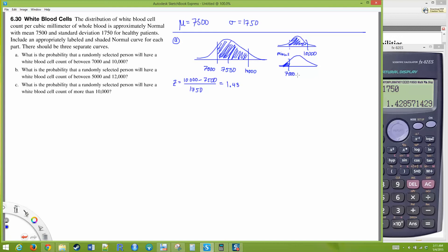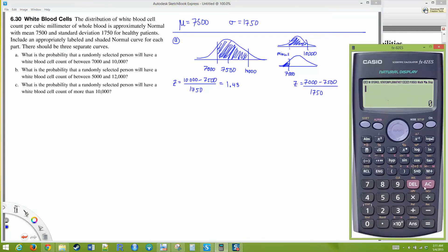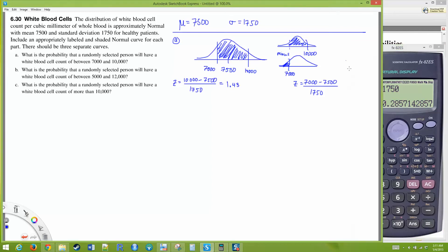Let's find the z score over here. z is going to be 7000 minus 7500 divided by 1750. That's 7000 minus 7500 divided by 1750. I get a z score of negative 0.29, rounding to two decimal places.